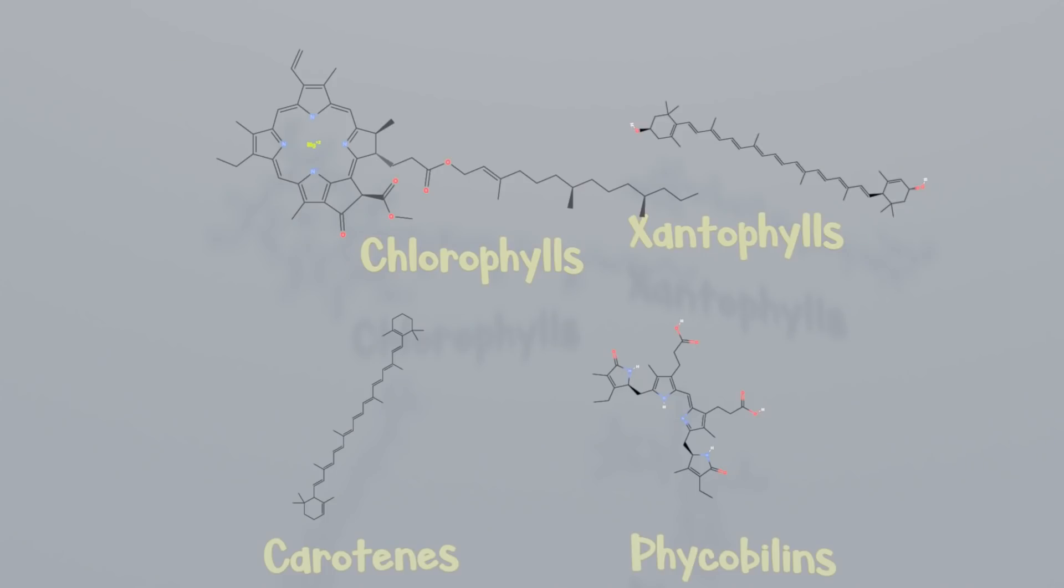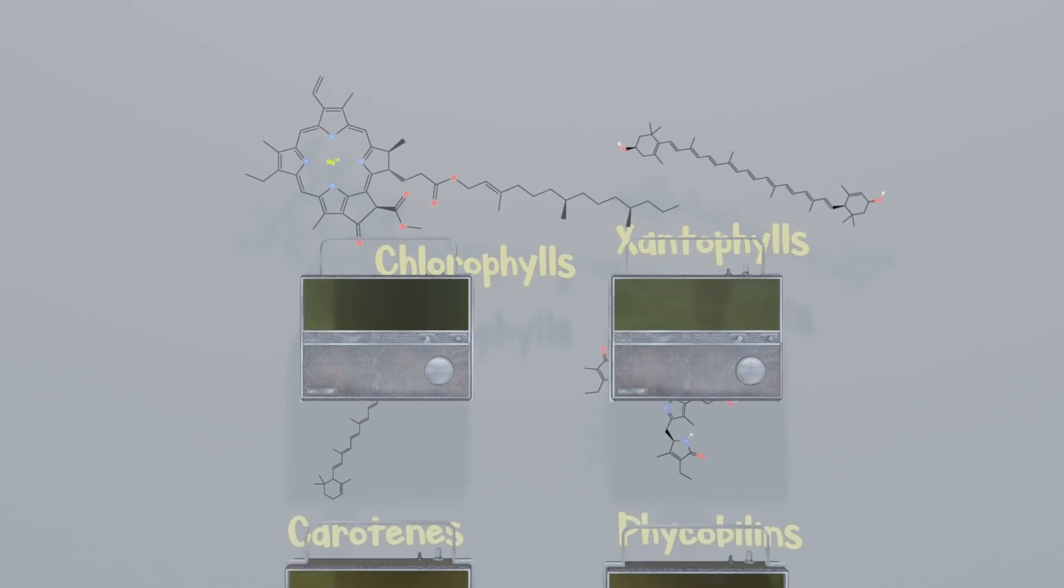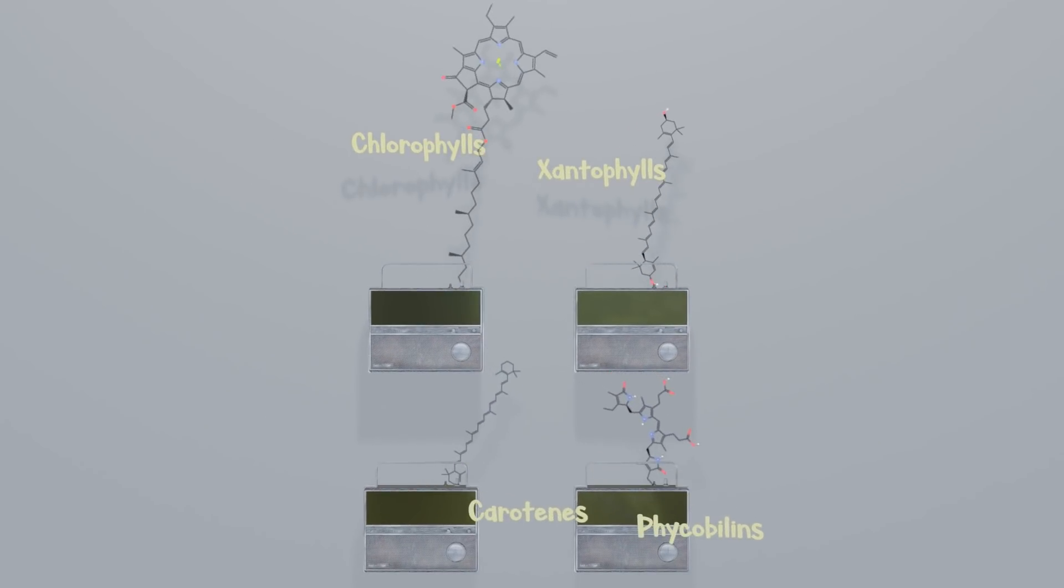There are multiple different pigments, each structured to absorb a different wavelength of light. You can think of them as antennas tuned to specific radio stations. But instead of frequencies, we use wavelengths.